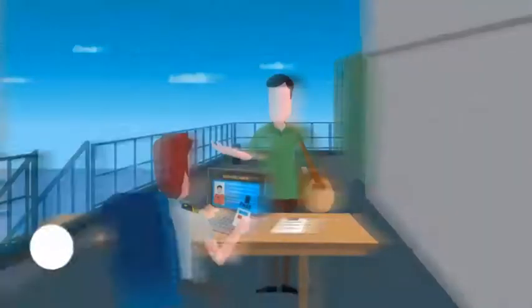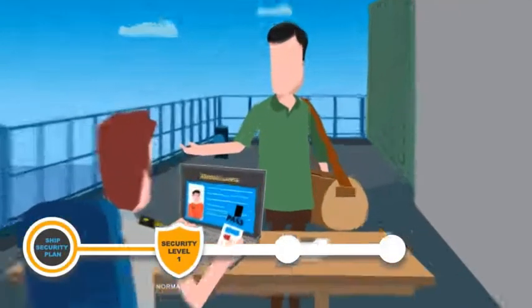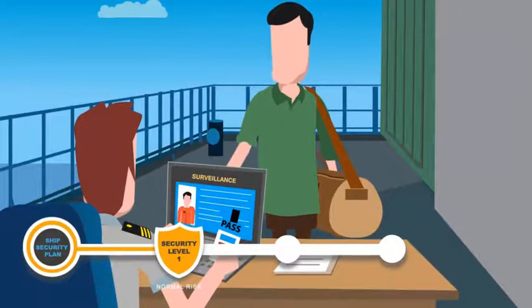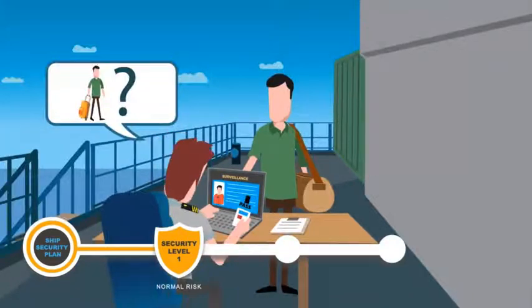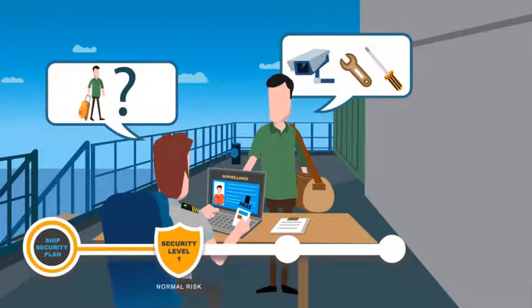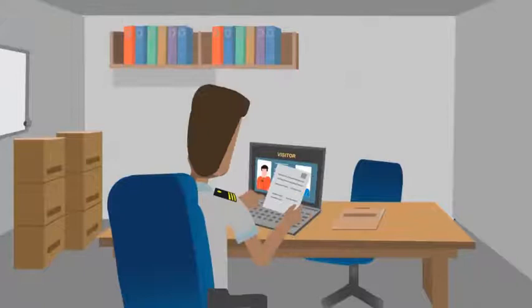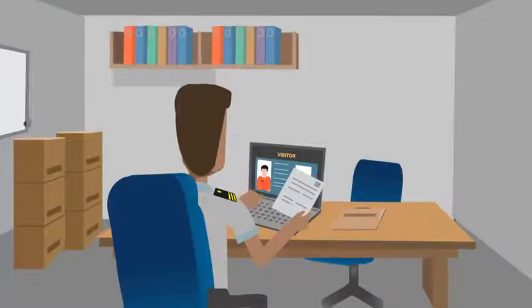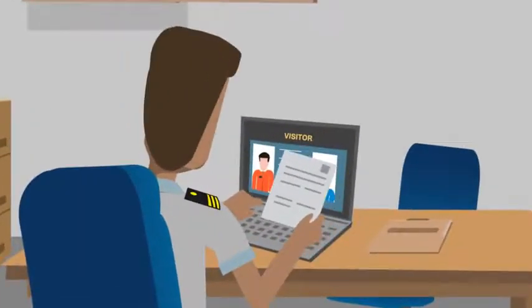At security level 1, check tickets, boarding passes, work orders, and ID cards to verify the reason for personnel seeking access to the vessel. Positively identify crew members, passengers, vendors, dock workers, and authorized visitors prior to each embarkation.